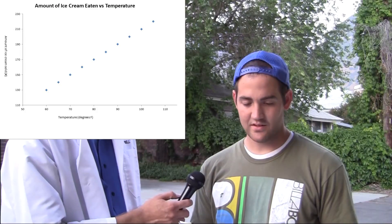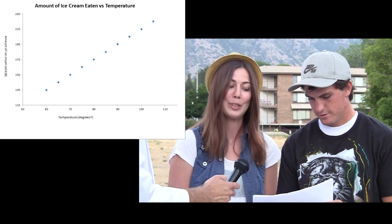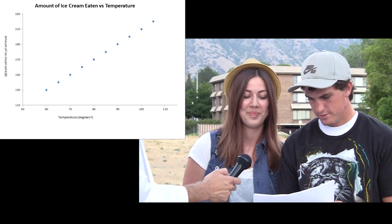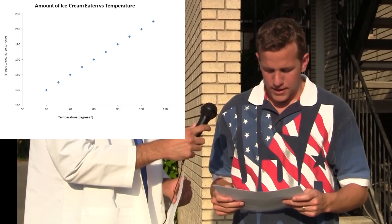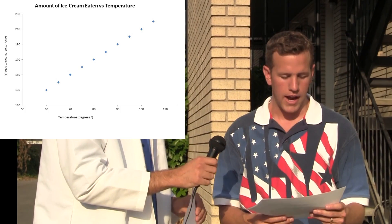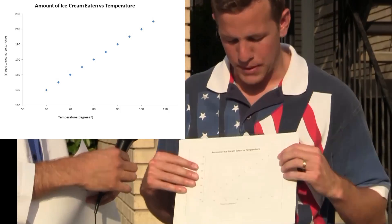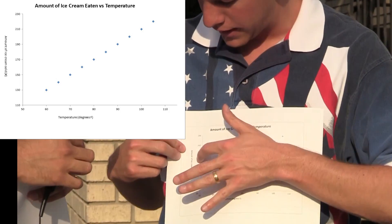Pie charts and bar graphs are just two examples of different graphs that you'll see this year, but they're not the most common type of graph used in science. The graph that's most common — the one we really want to focus on — is this next one. This is showing the amount of ice cream eaten versus the temperature. The more ice cream is sold, the hotter it is. So the higher the temperature, the more ice cream is being eaten by people. This is the temperature and this is the amount of ice cream being eaten.